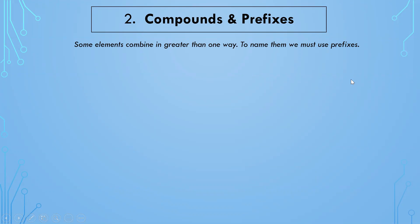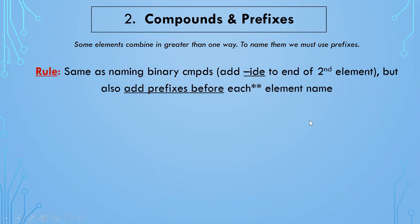The reason we have to use prefixes goes back to the law of multiple proportions. Some elements can combine in greater than one way, so we have to name them appropriately. CO is a different compound than CO2 — it contains the same elements but in different quantities. The rule is very similar to the binary rule: say the name of the first element, then the name of the second element with the suffix -ide.